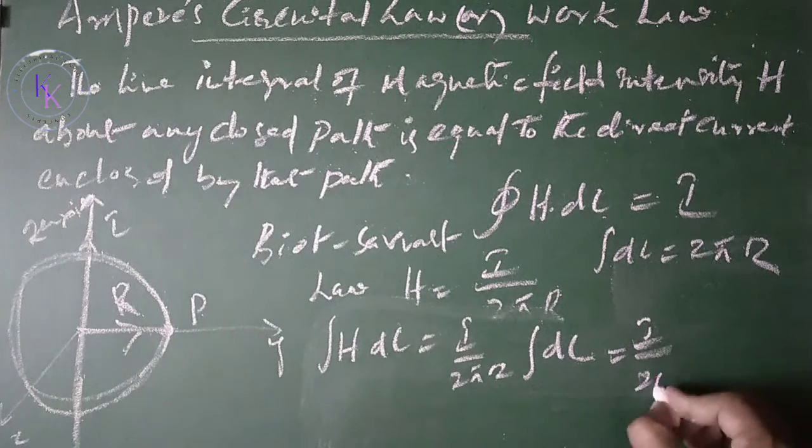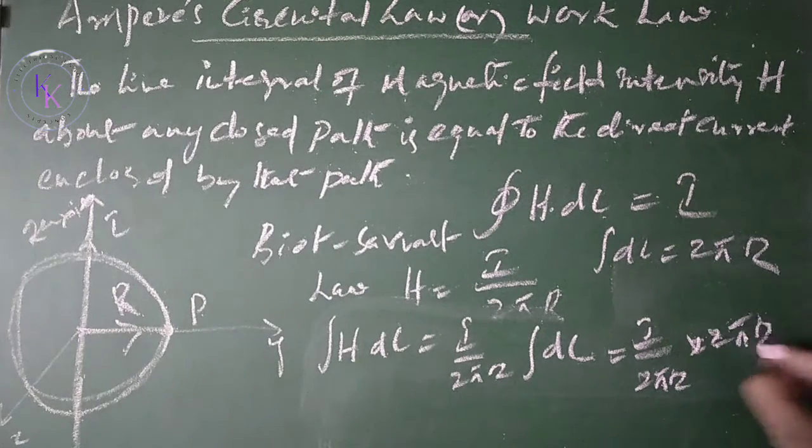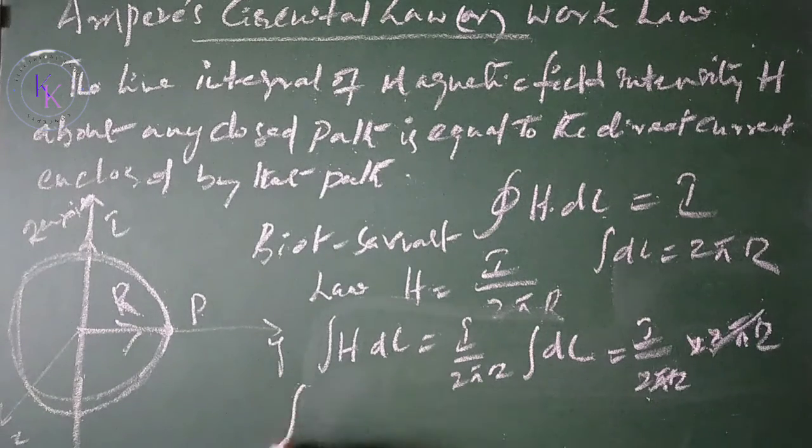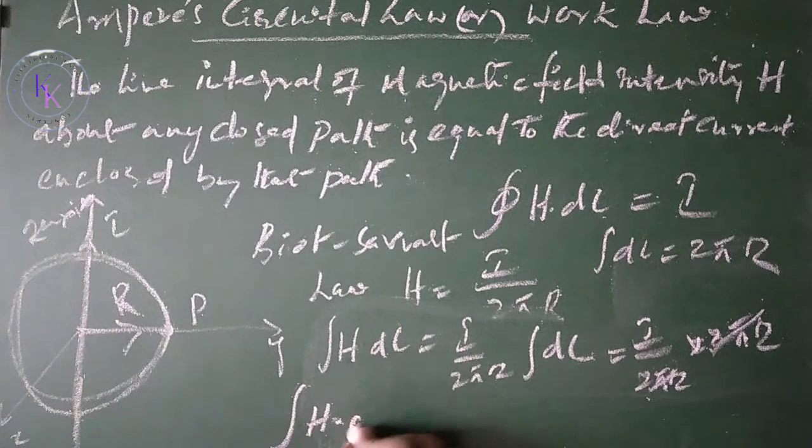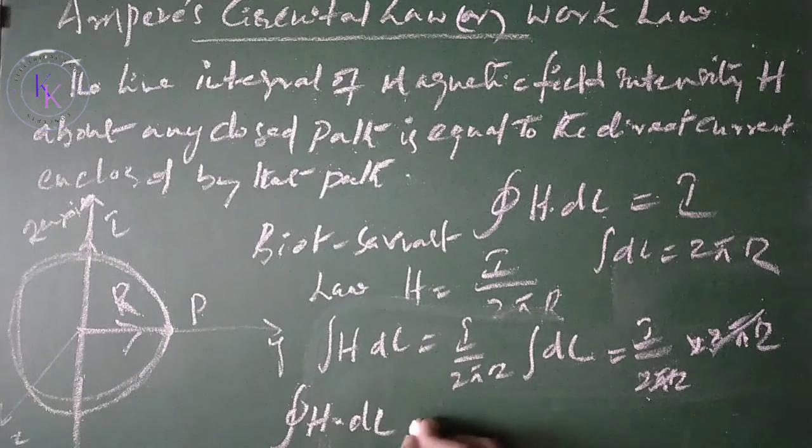2πr and 2πr get cancelled. Then integral H·dl for the closed path equals I. Hence, Ampere's Circuit Law or Ampere's Work Law.